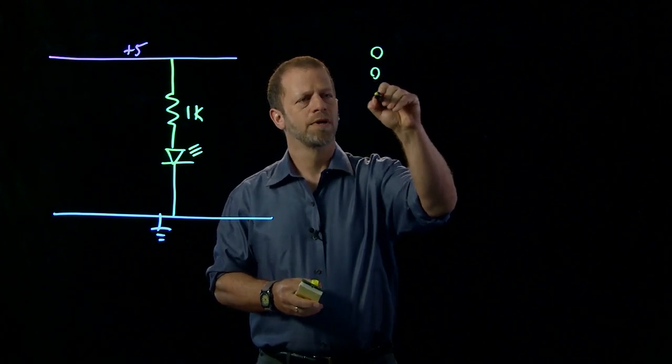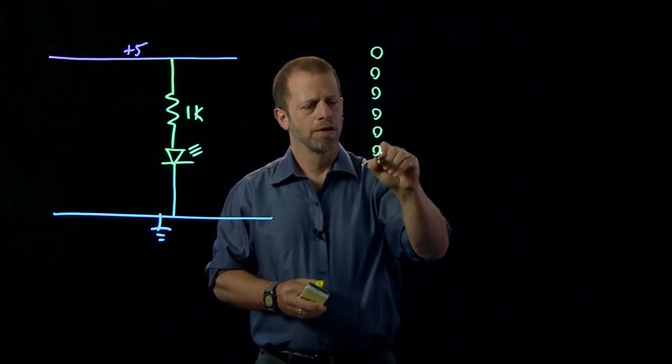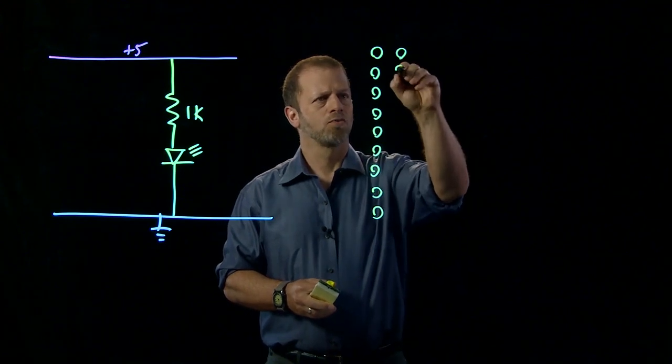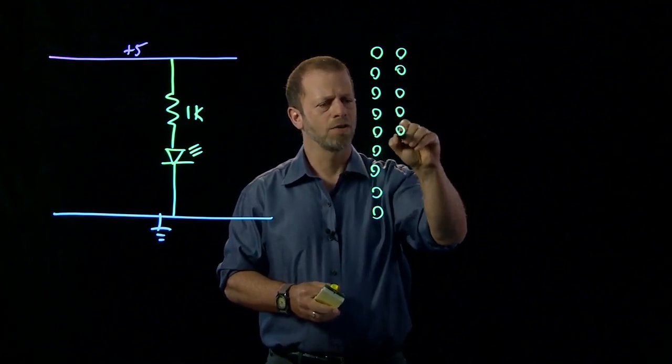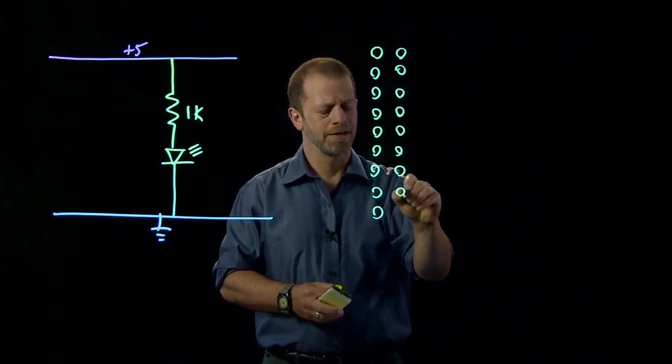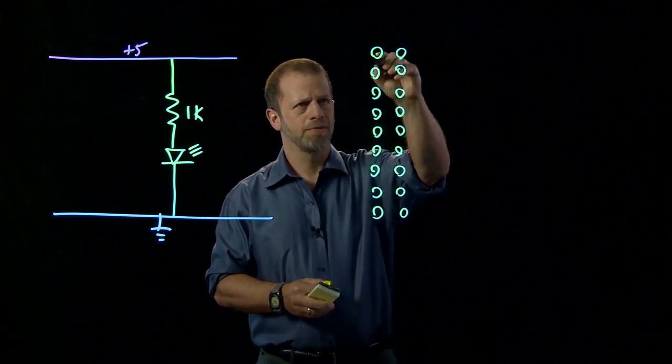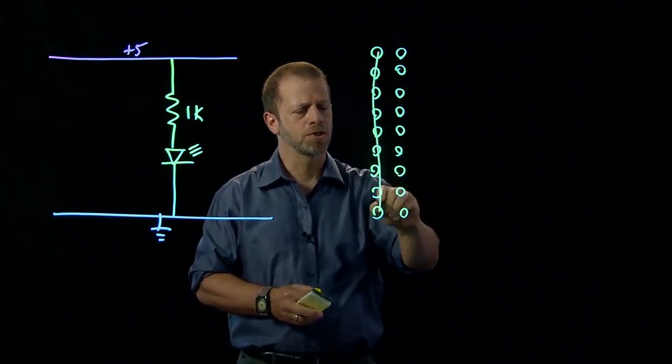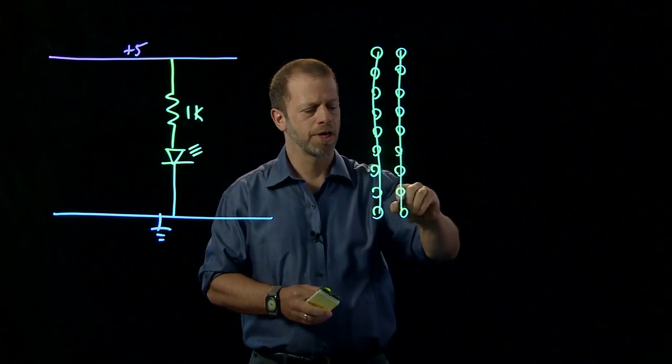Two rows of them on the left and two rows on the right are what are called rails. And they are connected, although all the holes just look like individual holes. The connectivity pattern is that these are all connected to each other by a conductor inside the board.